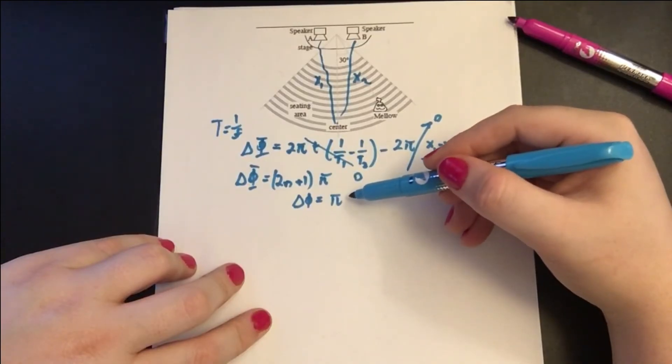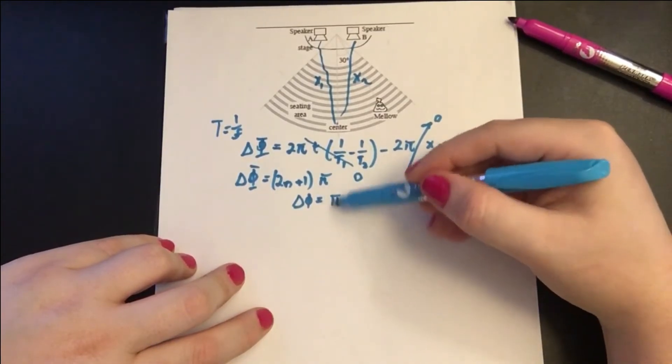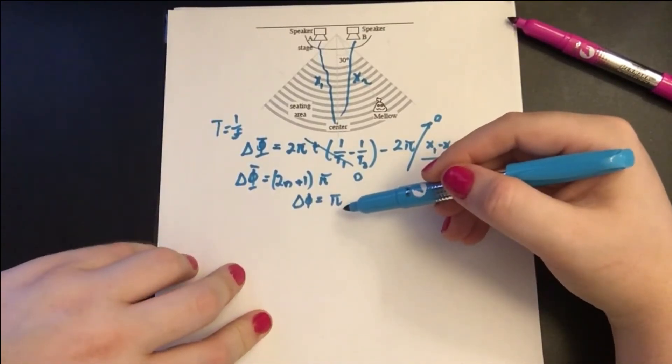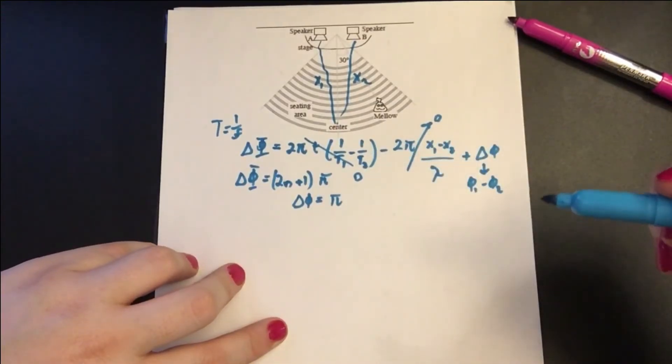If they were not wired oppositely, this would be not 2n plus 1, it would be constructive interference. Or it could be wired slightly out of sync, in which case you wouldn't get either a multiple of π or a multiple of 2π. But for this problem, they're wired opposite.